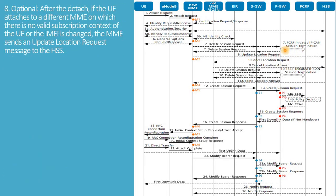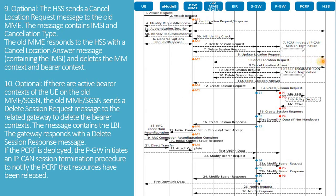Optionally, after detach, if the UE attaches to a different MME on which there is no valid subscription context of the UE or the IMEI is changed, the MME sends an update location request message to the HSS. The HSS sends a cancel location request message to the old MME, containing IMSI and cancellation type. The old MME responds with a cancel location answer message and deletes the MM context and bearer context. If there are active bearer contexts on the old MME/SGSN, it sends a delete session request message to the related gateway, and if the PCRF is deployed, the PGW initiates a PCAN session termination procedure.